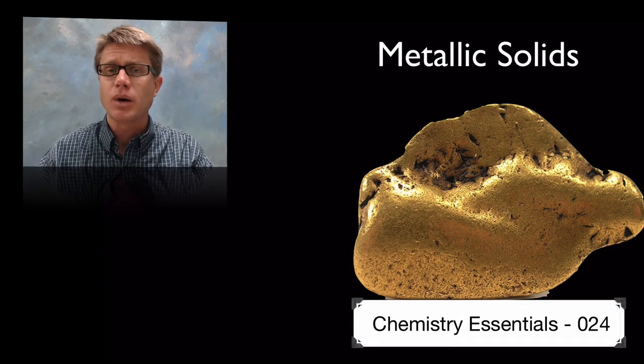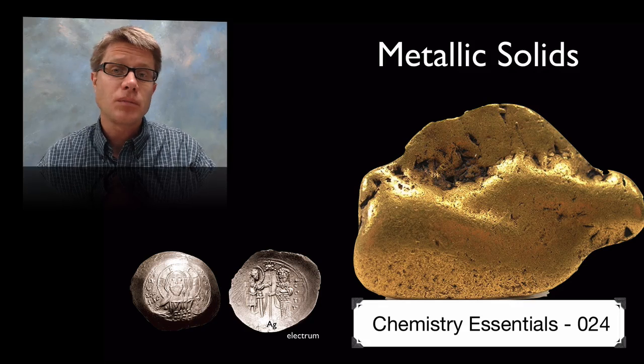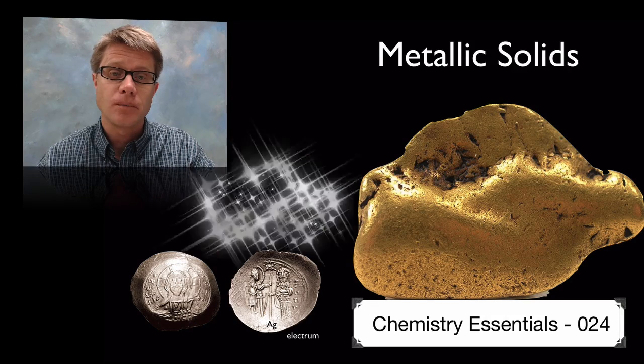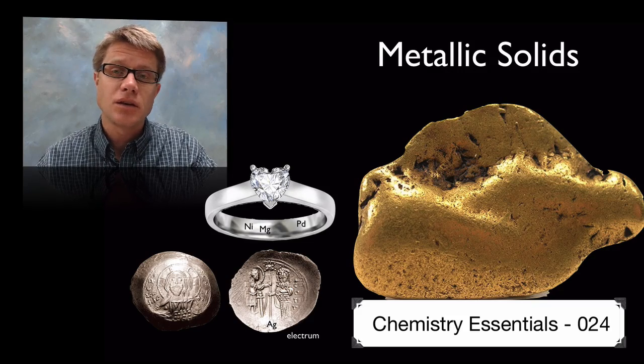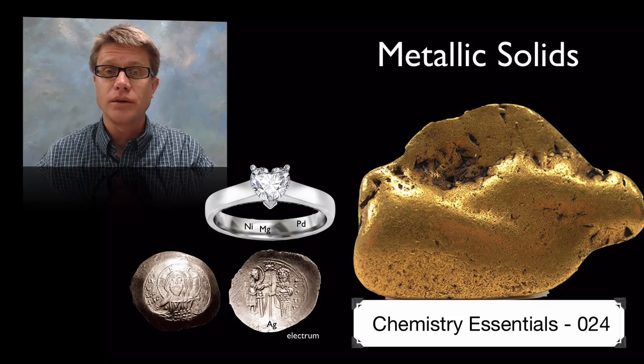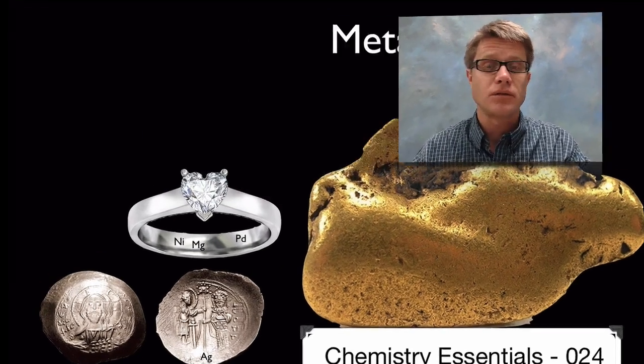And we also can bend metals to our will. In other words we can mix gold with silver and we get something called electrum. And today we can mix gold with things like nickel, magnesium, palladium and we can get white gold. And so we can form these alloys of metals.